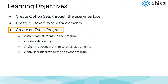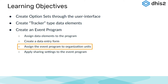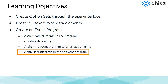We will create the actual event program, then assign the data elements we have made to the program. We will then take the data elements we have assigned to the program in order to make a data entry form. We will then assign the event program to organization units, and lastly apply sharing settings to the event program.